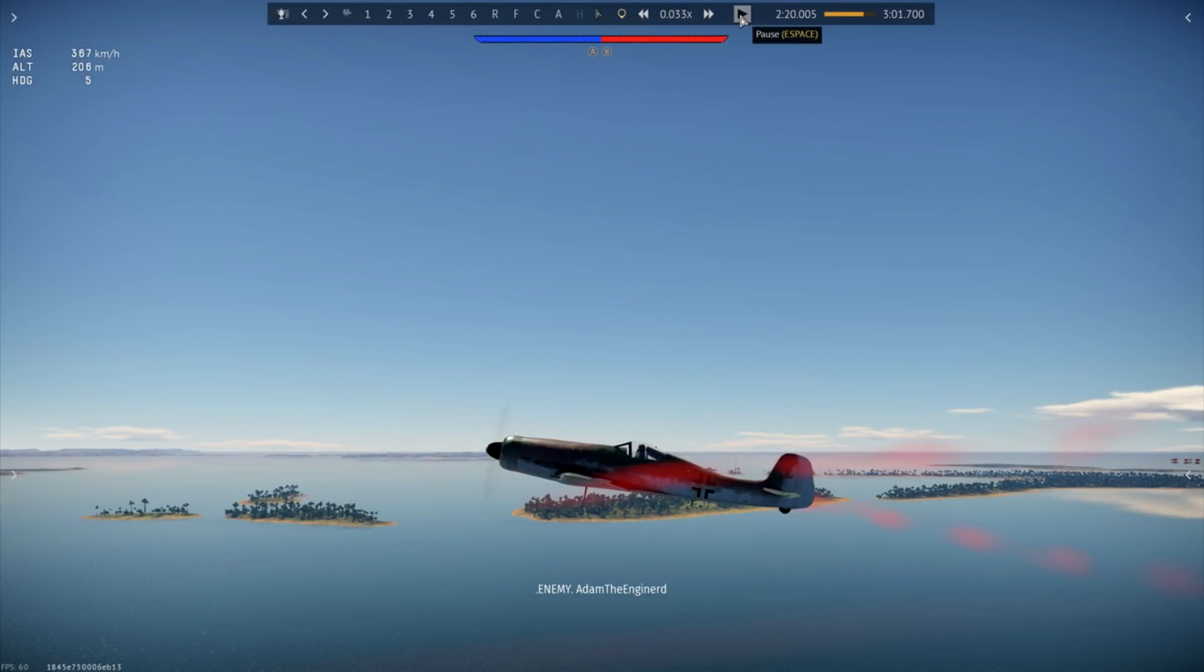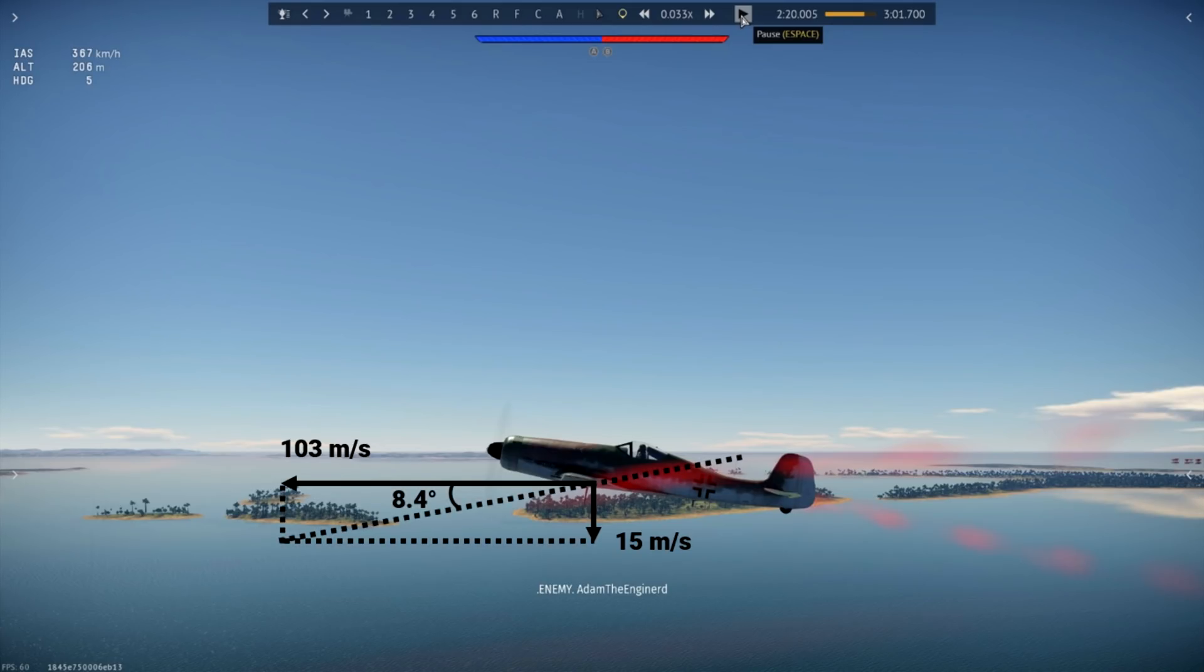This is a screenshot of the TA-152H rolling left or counter clockwise, so the wing closest to you has a downwards vertical speed while the aircraft is moving forward. Based on the TA-152H's wingspan of 14.44 meters and a roll rate of 120 degrees per second, the vertical wingtip speed is 15 meters per second. The forward speed is of course 370 kph, which is equal to 103 meters per second. With both of these speeds, we find an angle of 8.4 degrees, and that's the angle of attack that the wingtip sees.